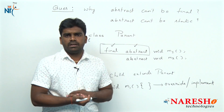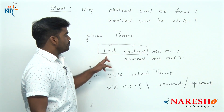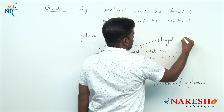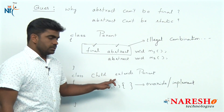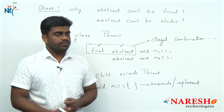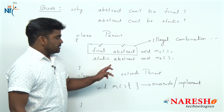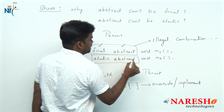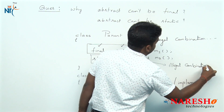So they may also ask: tell me one illegal combination of modifiers in Java — you can say final and abstract is an illegal combination. Now the second, more confusing question: why can we not declare an abstract method as static? That is also an illegal combination of modifiers.